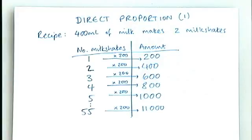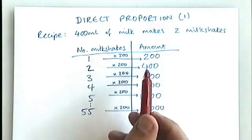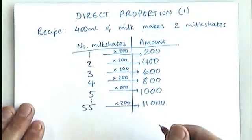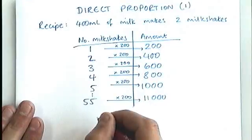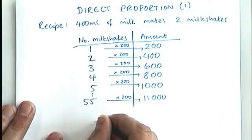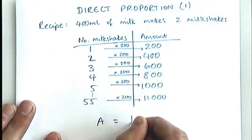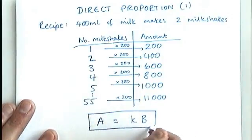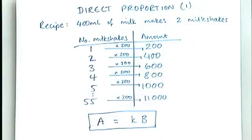So this idea that you can multiply one number by a fixed amount, 200 in this case, to get the other number, is the key idea behind direct proportion. And in fact, for direct proportion, we always write down a formula in this format, A equals KB, just like that.